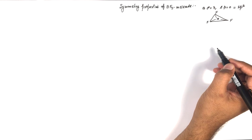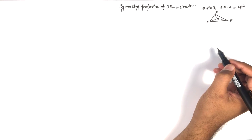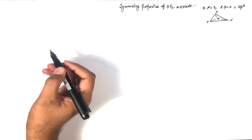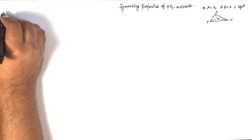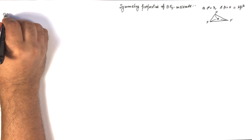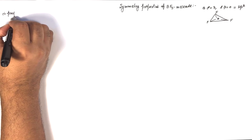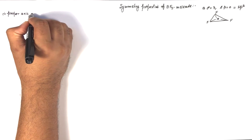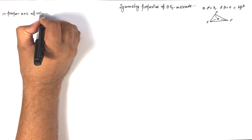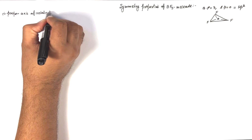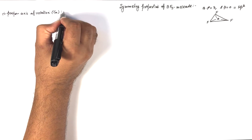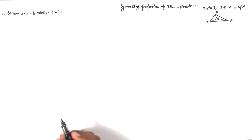Let's start our investigation from the presence of proper axis of rotation. We will search how many proper axes of rotation are present in this molecule — that is the CN operation. Actually, in this molecule two proper axes of rotation are present.